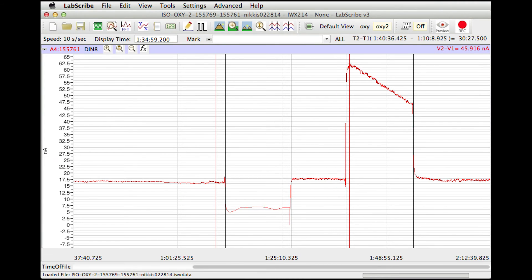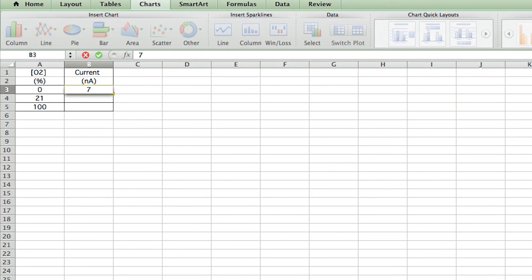The baseline recordings for the three samples with 21% dissolved oxygen should all be the same. Here is where the sensor was in the zero percent solution, and here it is in the 100% solution. Determine the current at these three levels and enter those values into an Excel spreadsheet.